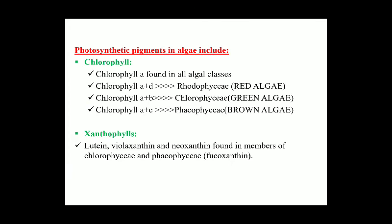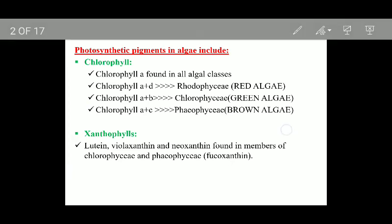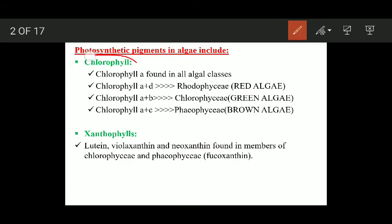Now let's look at the different types of photosynthetic pigments found in different groups of algae. First we will talk about chlorophyll distribution — how chlorophyll is distributed in different groups of algae. Chlorophyll a is found in all the algal classes; this is very important.